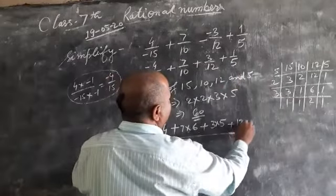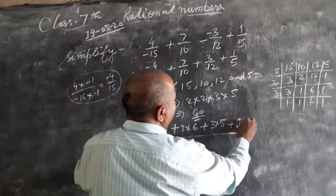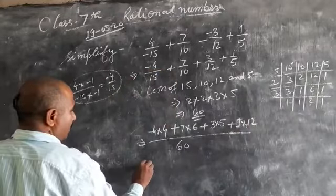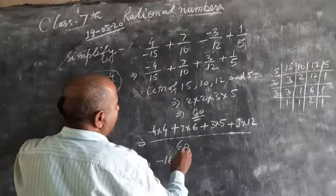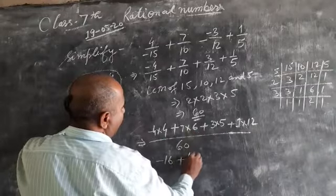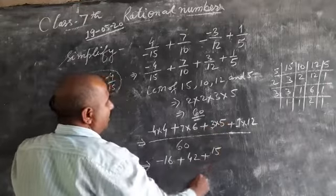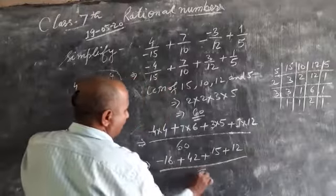You will multiply by these numbers. Now, you will get minus 16 plus 42 plus 15 plus 12 upon 60.